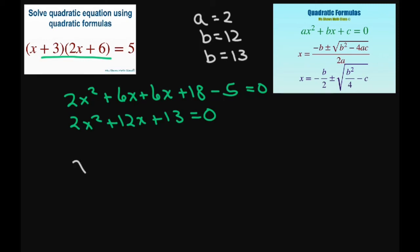So this is going to give you x equals negative 12 plus or minus square root of 12 squared, 144, and then minus 4ac. All divided by 2 times 2.